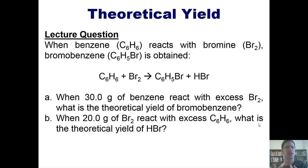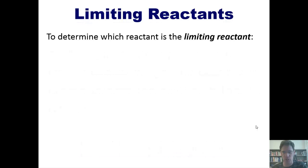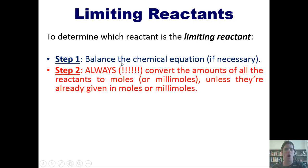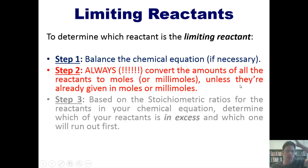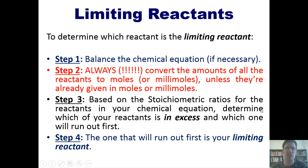Now, with that command of the subject under your belt, let's move on to the next topic, which is very closely related: limiting reactants. The limiting reactant is the reactant that runs out first in a chemical reaction. The other reactant — the one that doesn't run out — is said to be added in excess. This can be a very daunting subject for students to understand at first, so please pay attention. To determine which reactant is the limiting reactant: first, balance the chemical equation; then always convert everything into moles; then, based on the stoichiometric ratios, determine which reactant is in excess and which will run out first. The one that runs out first is your limiting reactant.